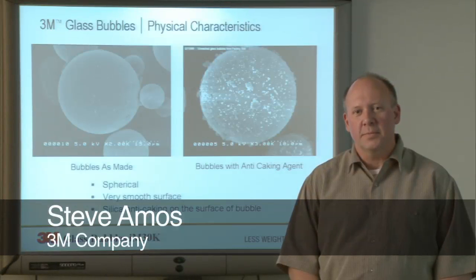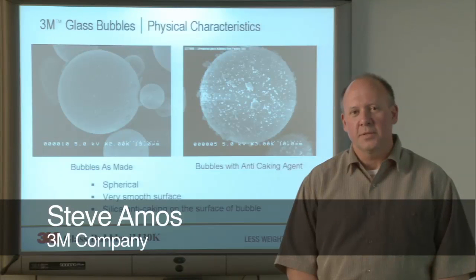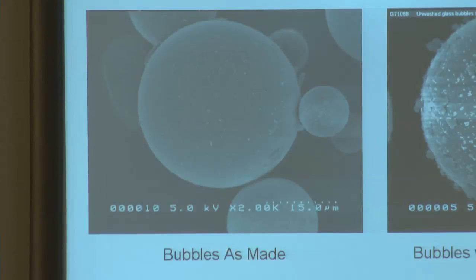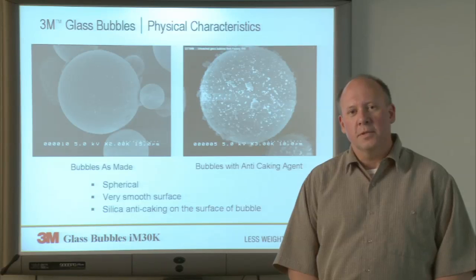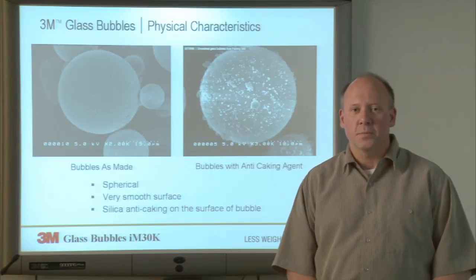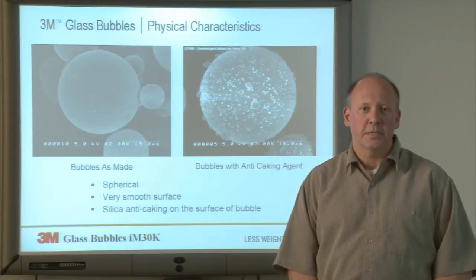At 3M, we make glass bubbles that can be used to lightweight composite materials. In these pictures, I'm showing the glass bubble as made in our factory on the left, and you can see from the register at the bottom right of the slide a 15 micron scale. So this particle is about 20 microns. We make glass bubbles from 20 to about 70 micron average particle size.